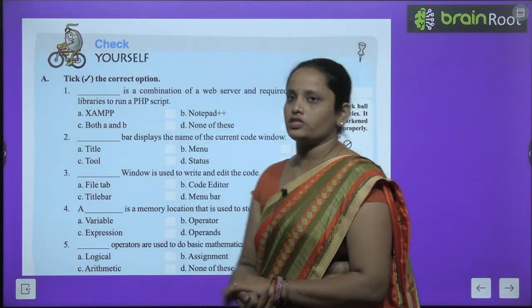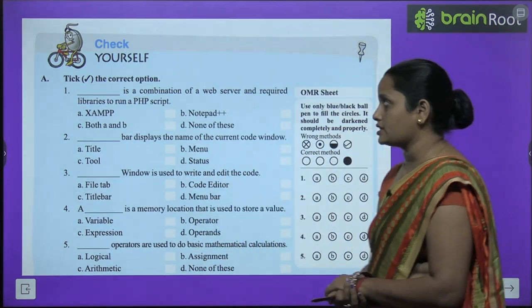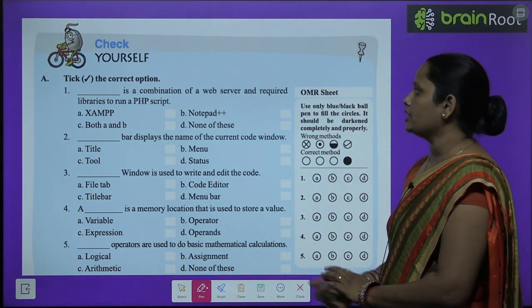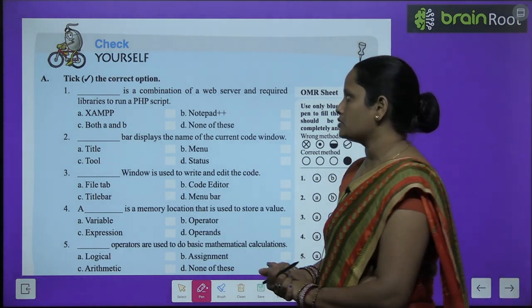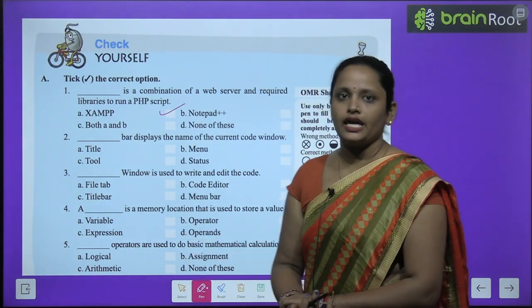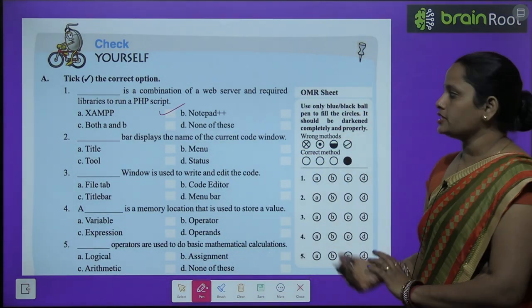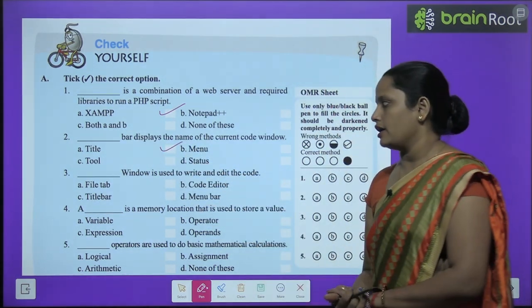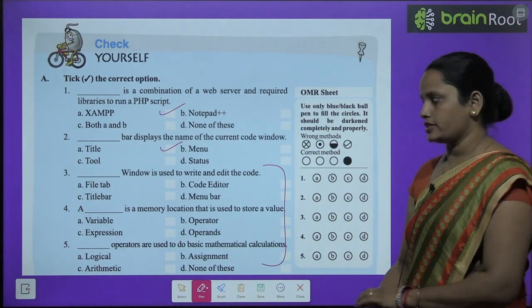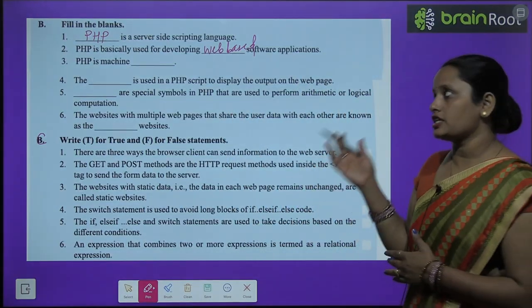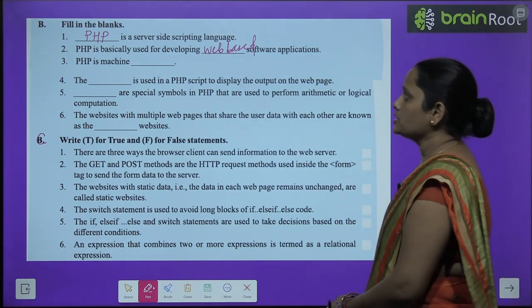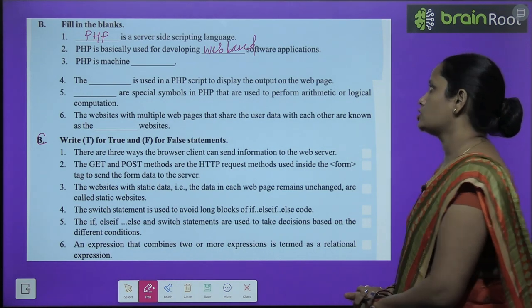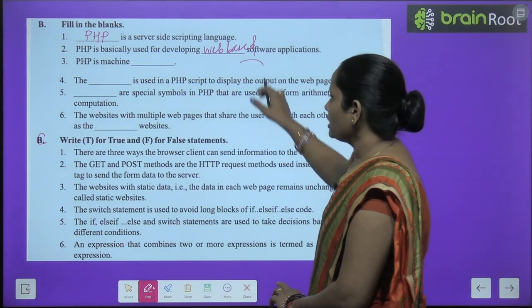Now let's move on to the book exercise — Check Yourself. First, tick the correct option. Question 1: dash is the combination of web server and required libraries to run a PHP script — the answer is XAMPP. Question 2: dash bar displays the name of the current code window — the answer is title bar. Do the rest of the questions yourself. For fill in the blanks: PHP is a server side scripting language; PHP is basically used for developing web-based software applications. The rest are your homework.